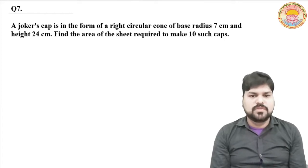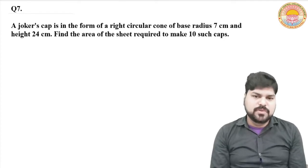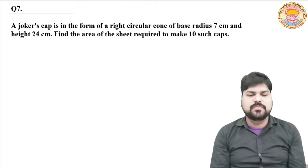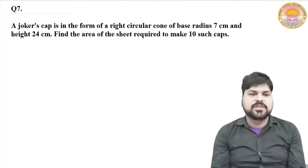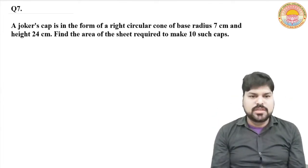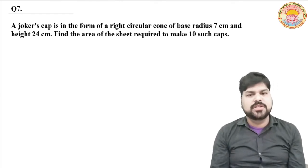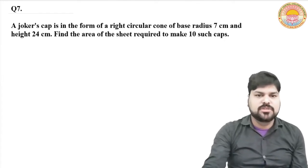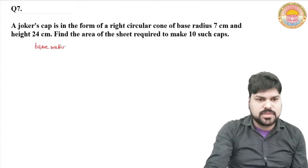Question 7. A joker's cap is in the form of a right circular cone of base radius 7 cm and height 24 cm. Find the area of the sheet required to make 10 such caps.